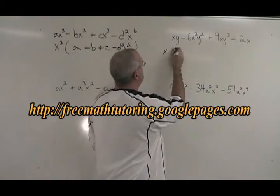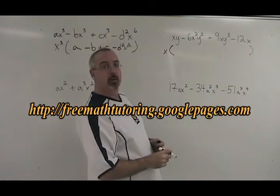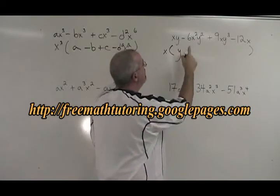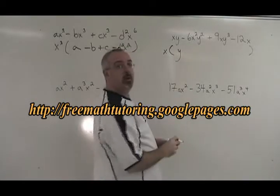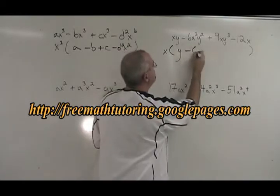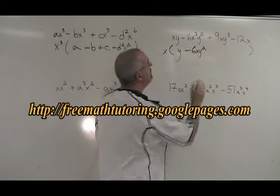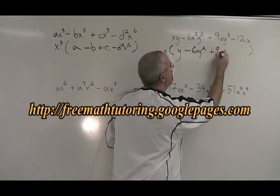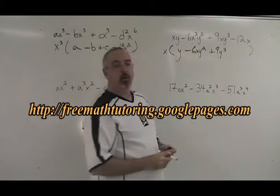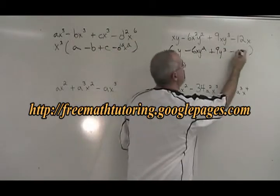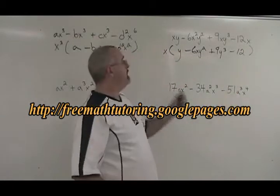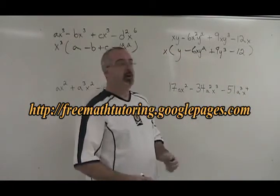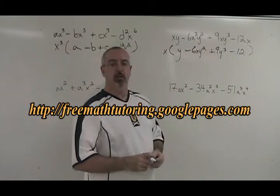We will divide everything in this expression by X and write the answer inside the bracket. XY divided by X is Y. Negative 6X squared Y squared divided by X is negative 6XY squared. 9XY cubed divided by X is 9Y cubed. And negative 12X divided by X is negative 12. Again, if we multiply the X by the contents of the bracket, we should get this original question to verify our answer.